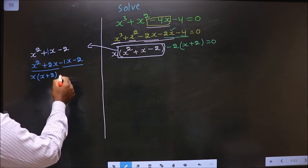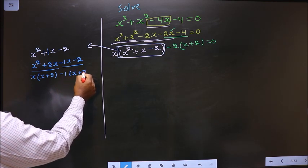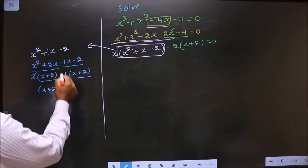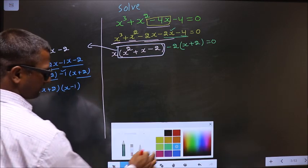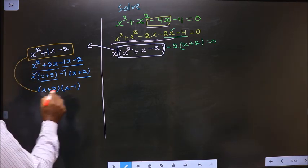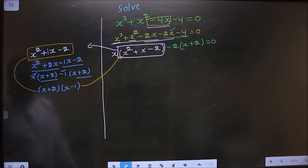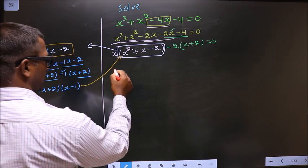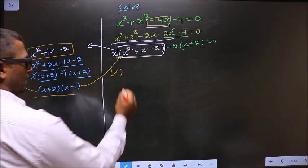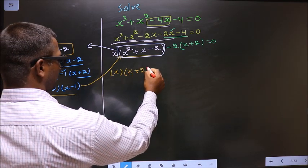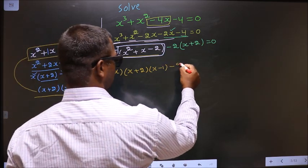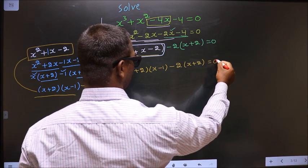From these 2, take out minus 1 common — you get x plus 2. So now you take out x plus 2 common. Here you have x and here you have minus 1. So now in place of this quadratic, I replace this over here. So I get x times x plus 2 times x minus 1, and this as it is, minus 2 times x plus 2 equal to 0.